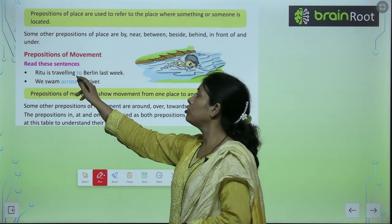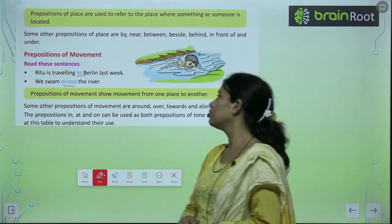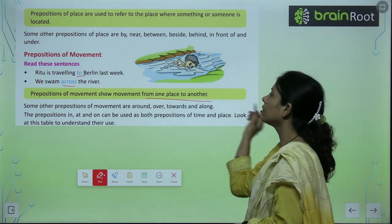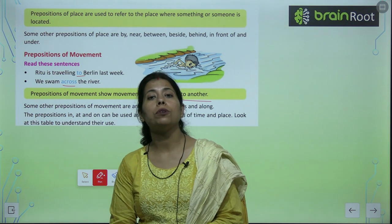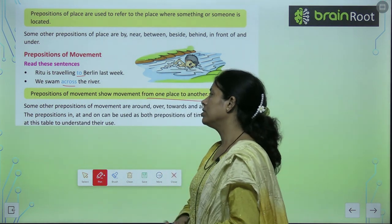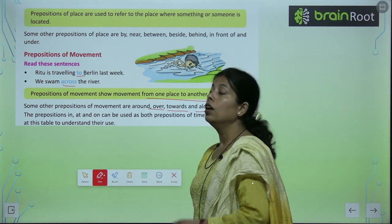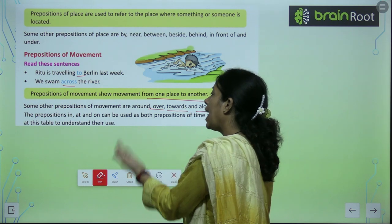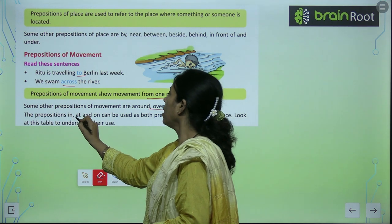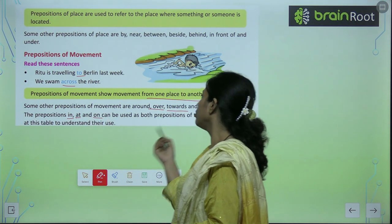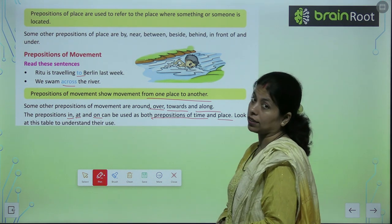Read these sentences: 'Ritu is traveling to Berlin.' 'We swam across the river.' Prepositions of movement show movement from one place to another — ek jagah se doosri jagah jaate hain toh use bolte hain preposition of movement. Some other prepositions of movement are: over, towards, along. Also note: in, at, and on can be used for both prepositions of time and prepositions of place.